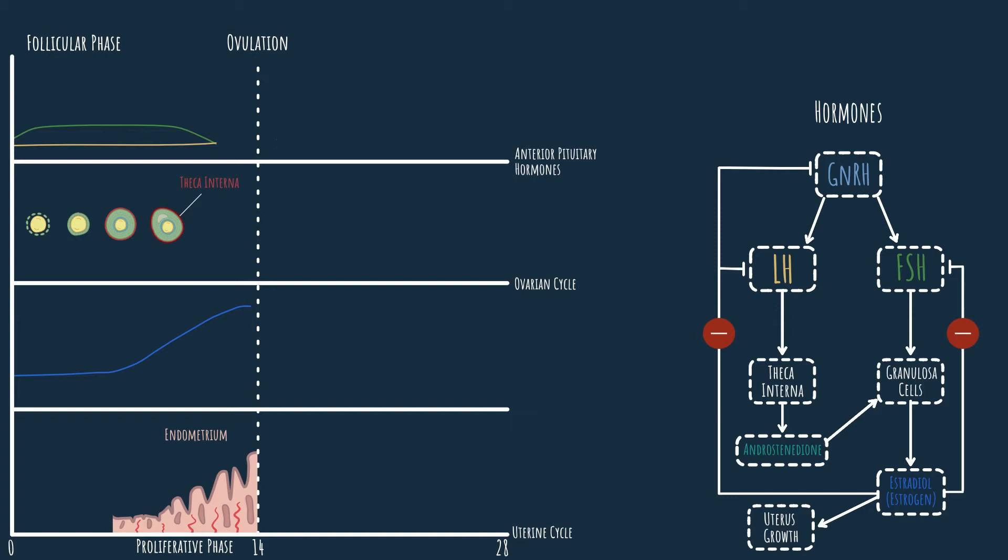We're not done with estradiol just yet, because as the follicles continue their maturation, estradiol continues to rise. It rises until it surpasses a concentration threshold, which we can see here on the graph. When estradiol surpasses this threshold, something rather strange happens. Estradiol stops acting as an inhibitor and starts acting as a powerful stimulator for FSH and LH secretion. Estradiol does so by acting on the hypothalamus once again and causing an increase in GnRH secretion. This causes an abrupt increase in LH and FSH concentrations, as we can see here on the graph.